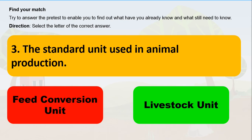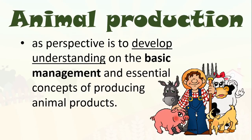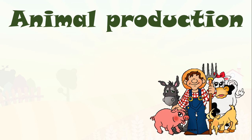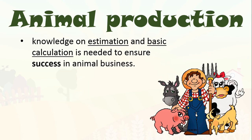When we say animal production, it refers to livestock. Animal production aims to develop understanding on the basic management and essential concepts of producing animal products. Knowledge on estimation and basic calculation is needed to ensure success in animal business — just like in crop production, it is important not just to determine tools and equipment, but also to have knowledge in estimation and basic calculation.